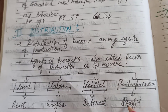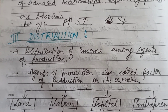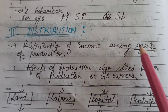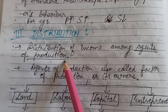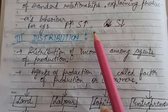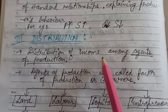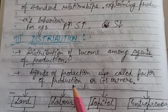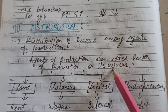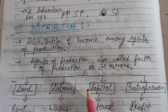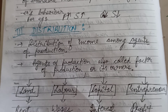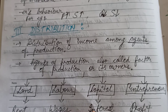In return, the producers give rent, wages, interest, and profit to the household sector. Therefore, under the third component of economics — that is distribution — distribution basically refers to the distribution of income among agents of production. From this you come to know how the producer sector and household sector are related to each other. The income generated by the producer sector is distributed among the agents of production, also called factors of production or their owners. In return for providing factor services, they are given factor payments which include rent, wages, interest, and profit.